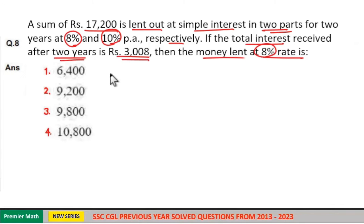You can solve this question in two methods. First one is the allocation method. Simple interest received in two years is Rs. 3,008. Now in one year, half of this - half of Rs. 3,008 is Rs. 1,504.